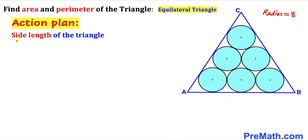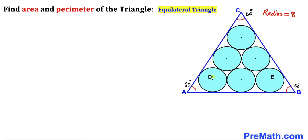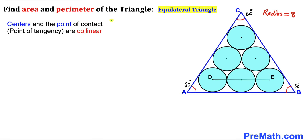Before we do anything else, we must find the side length of triangle ABC. Let's recall that the angles of an equilateral triangle are 60 degrees each, so all angles of triangle ABC are 60 degrees. Let's focus on the centers of the two circles at the bottom. I have connected these centers D and E, giving us straight line DE.